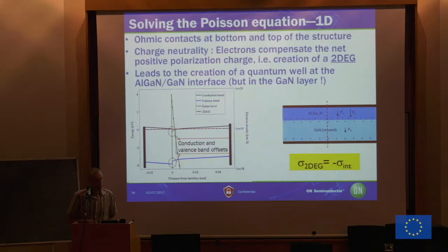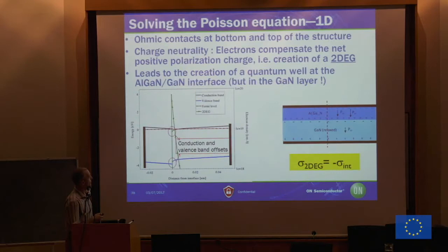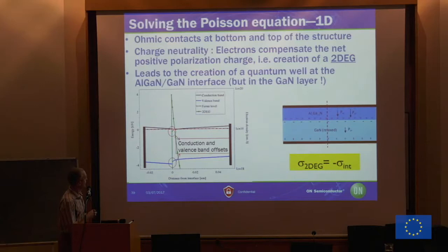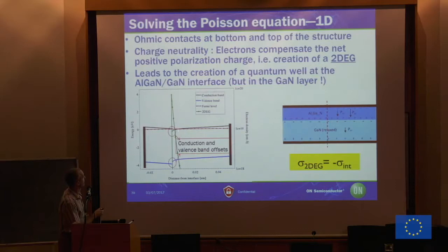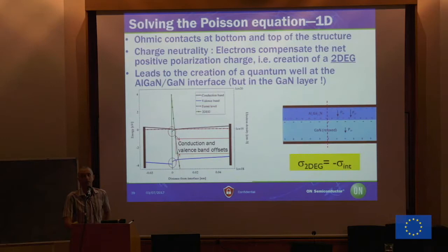If you put contacts on the structure and solve the Poisson equation, because of charge neutrality, the structure itself introduces a quantum well — the band gaps offset such that at the AlGaN/GaN interface, the Fermi level of the structure dips below the conduction band. This is how the very high 2D electron gas is built up. The density here is almost 10^20 per cubic centimeter — that's why these devices are sometimes called quantum well devices. The 2DEG is basically the opposite sign of the interface charge, because you need charge neutrality in the structure.